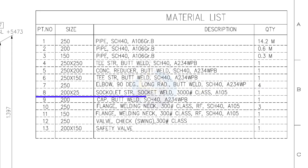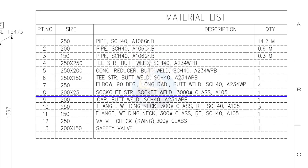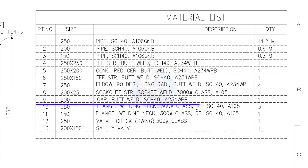Item number 8: 200 into 25 sockolet, socket welded, class 3,000 pound. Quantity 1. Item number 9: cap, butt welded, schedule 40. Quantity 1.